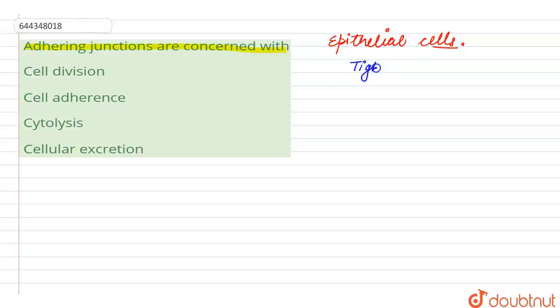They can be of various types. The first type is the tight junctions. Tight junctions occur in the apical parts of the adjacent epithelial cells which become tightly packed together and sometimes they are even fused to form the tight junctions.